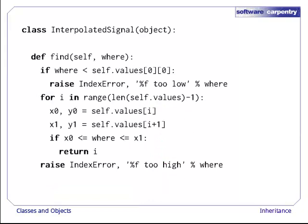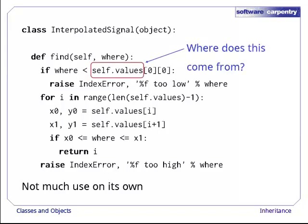Alright, let's try to apply this idea to our signal interpolators. Here's a class called interpolated signal that has just one method called find. Given an x value where, this method searches through self.values to find the location of the immediately preceding sample and returns the corresponding index. If where is out of bounds, find raises an exception. This method isn't particularly useful on its own, but it is exactly what step signal and linear signal need. Before showing how they use it, though, there's a design flaw in this class. Find depends on self.values, but interpolated signal doesn't create this anywhere. It seems to just appear by magic. We'll come back and fix this in a few slides.